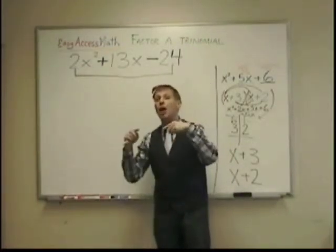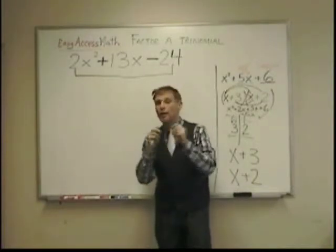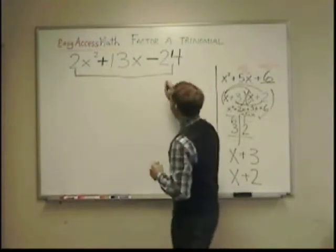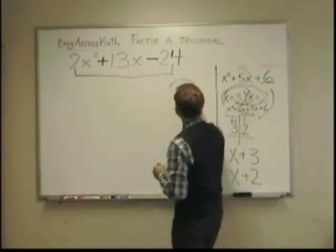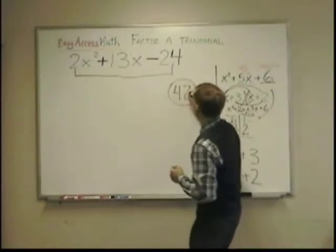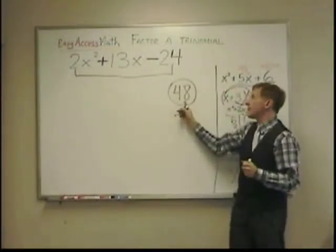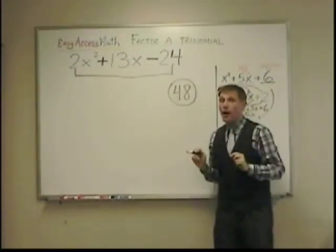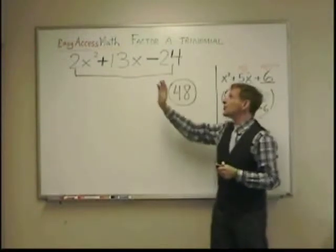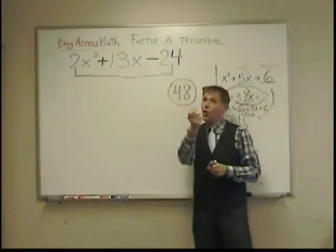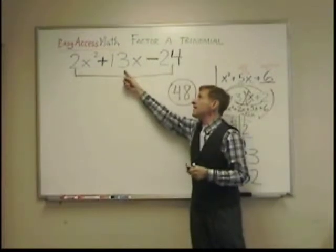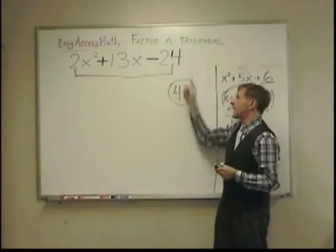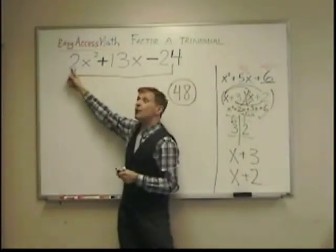You first have to do this setup. You have to multiply that two by the last number. And you're going to get a number that will be the number we're going to look as the number at which the two factors would multiply to. Here, two times 24 is 48. And that is the number that we are going to try to get two numbers to multiply to. Those two numbers still have to combine, add or subtract, to positive 13.